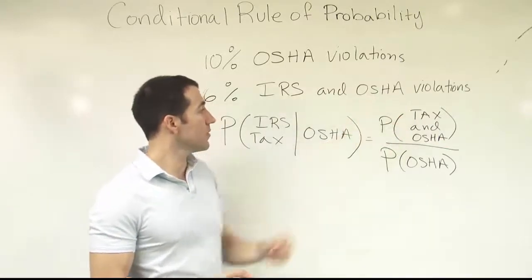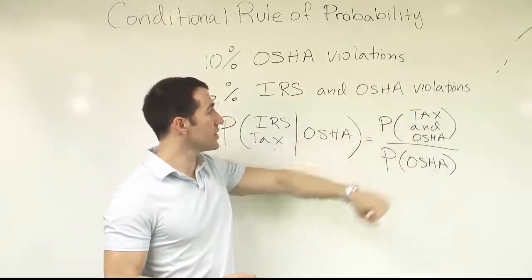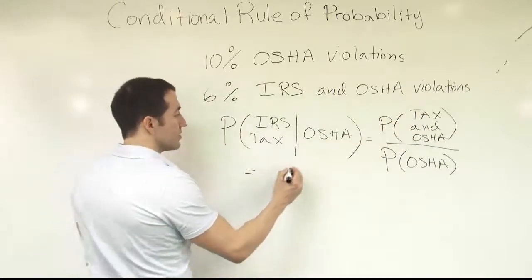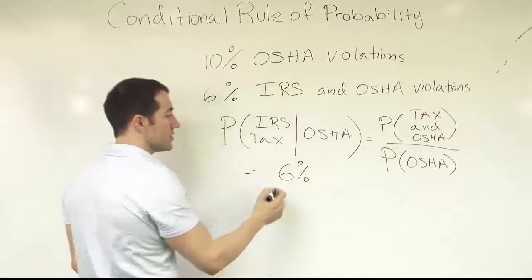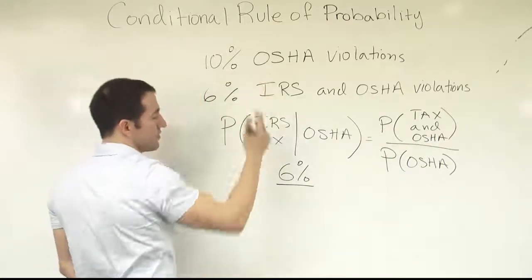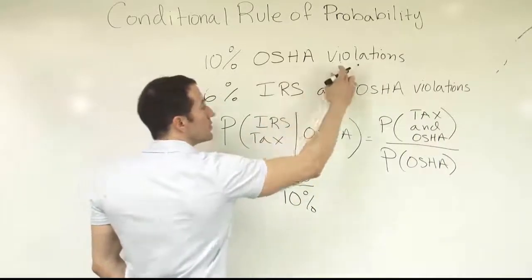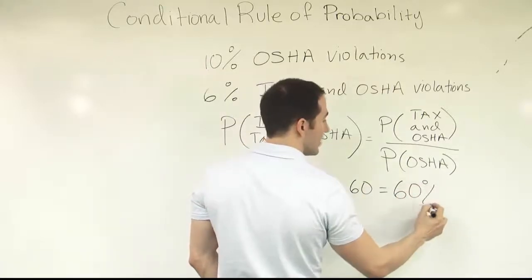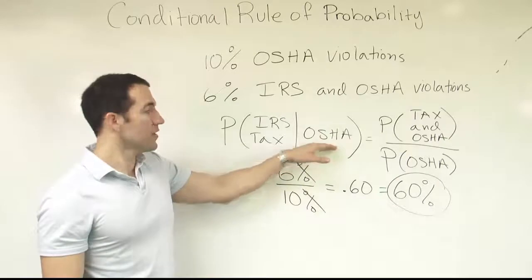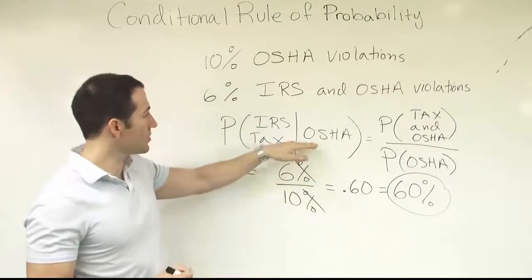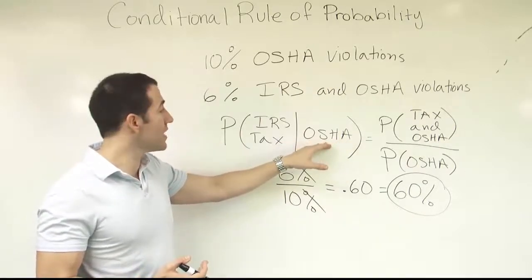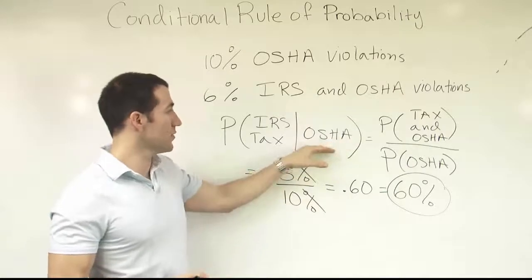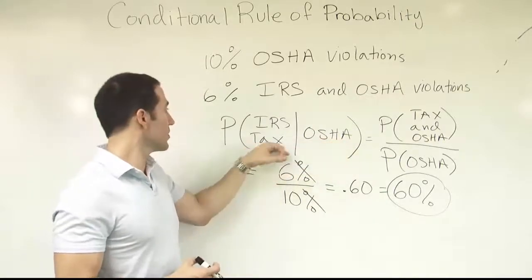Do we have this information? The probability that a company has both tax and OSHA violations is estimated by 6% — so the numerator is 6%. The probability of an OSHA violation is 10%, so the denominator is 10%. Dividing those gives 0.60, or 60%. This tells us that if you go to a company and notice it has OSHA safety violations, there's a 60% chance they're also cheating on their taxes — there's clearly a connection. Maybe companies willing to shortcut safety regulations are also willing to cheat on their taxes.